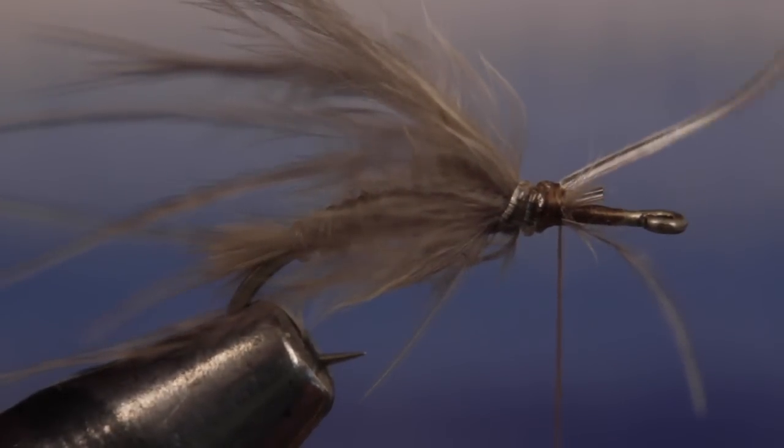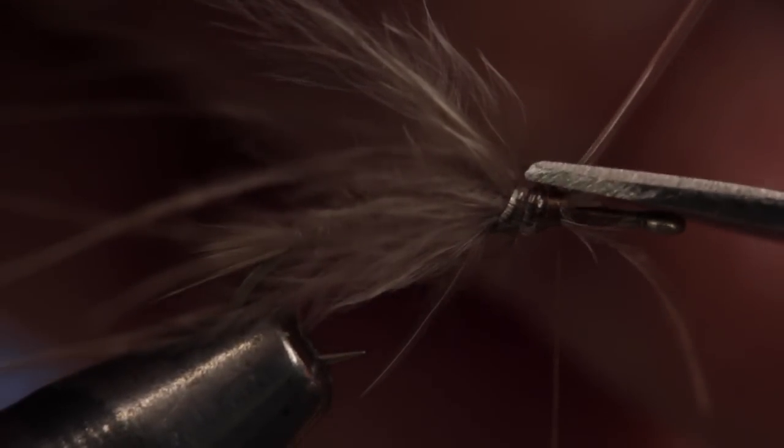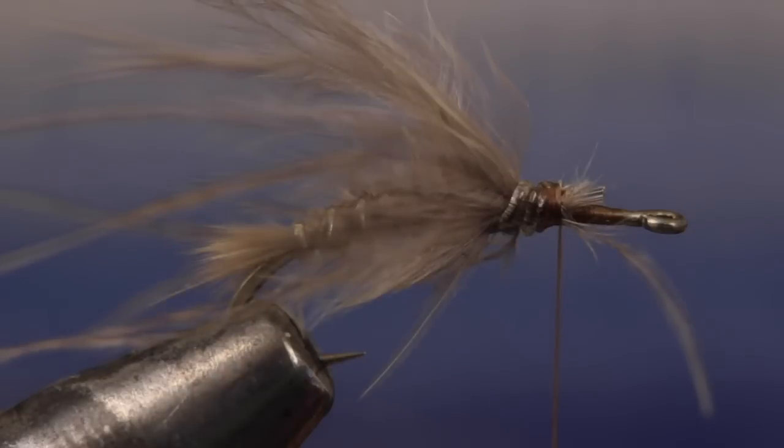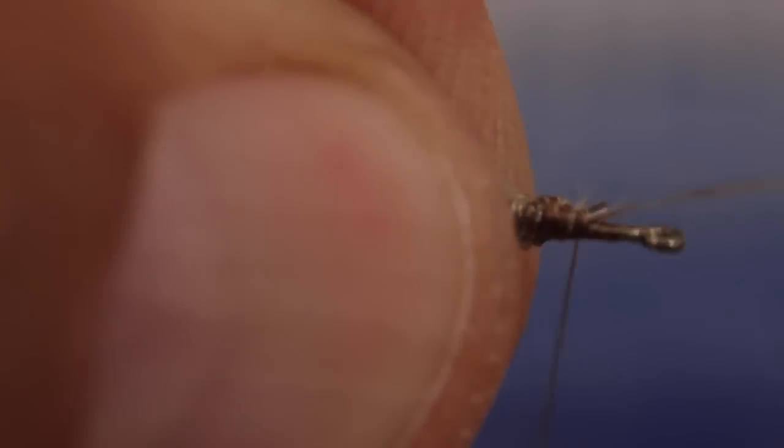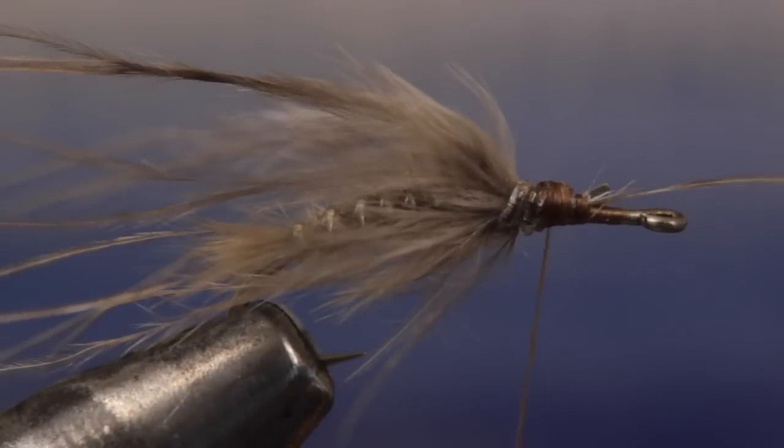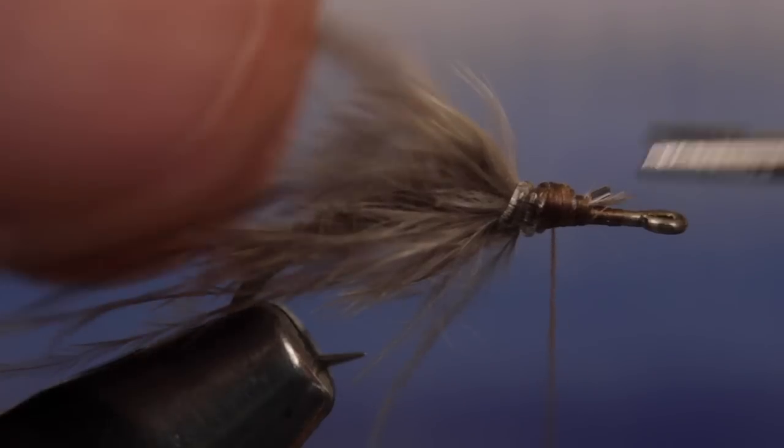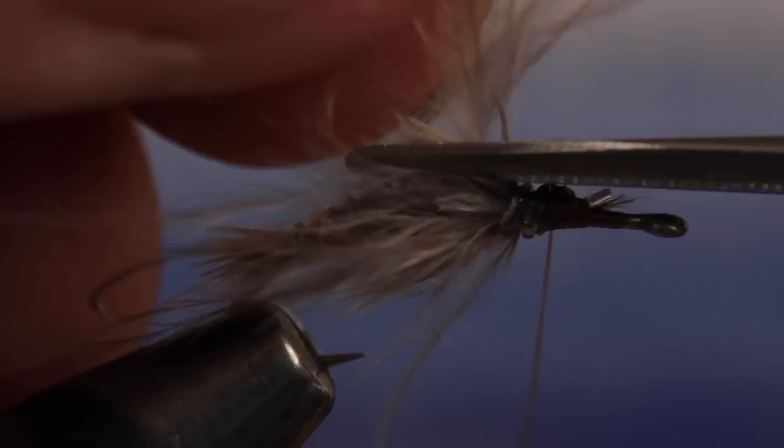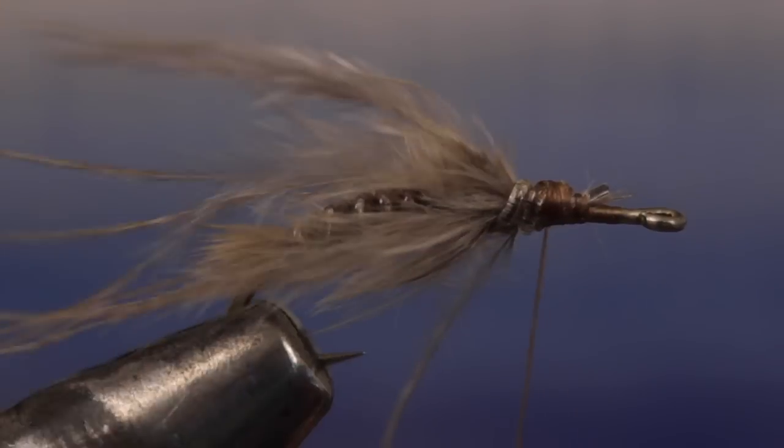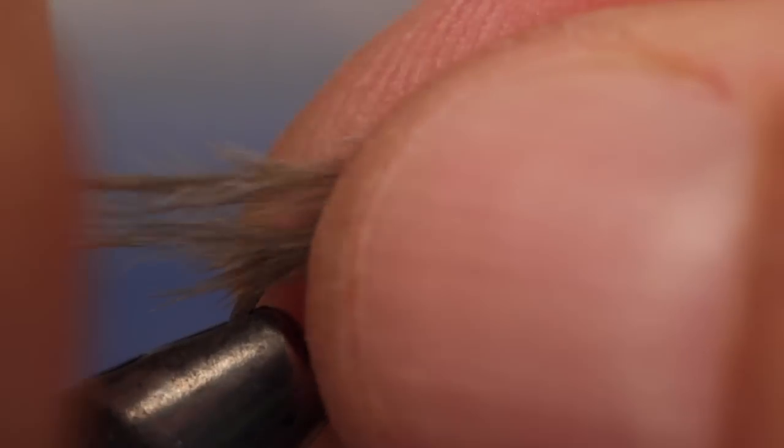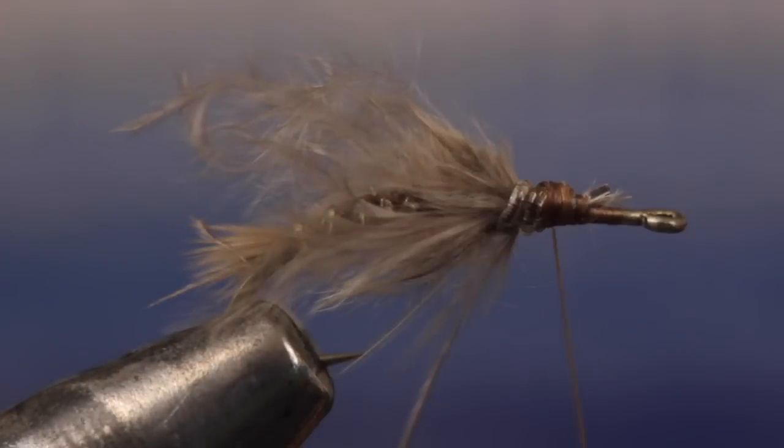Secure the rib to the hook shank with a few nice tight wraps of tying thread. Once you're sure it's not going to pull out, snip the excess rib off close. You can then take a few wraps of tying thread to really lock everything down. If you find that your fly has a few too many legs, trim some of them off with your tying scissors. If you want to shorten them, just break them off with your fingernails.